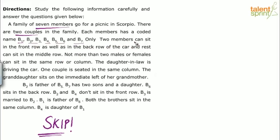So 2 members can sit in the front row, 2 members can sit in the back row, and the rest can sit in the middle row. Out of 7, if 2 sit in the front row and 2 in the back row, then the remaining 3 can sit in the middle row. Then it says not more than 2 males or females can sit in the same row or column.